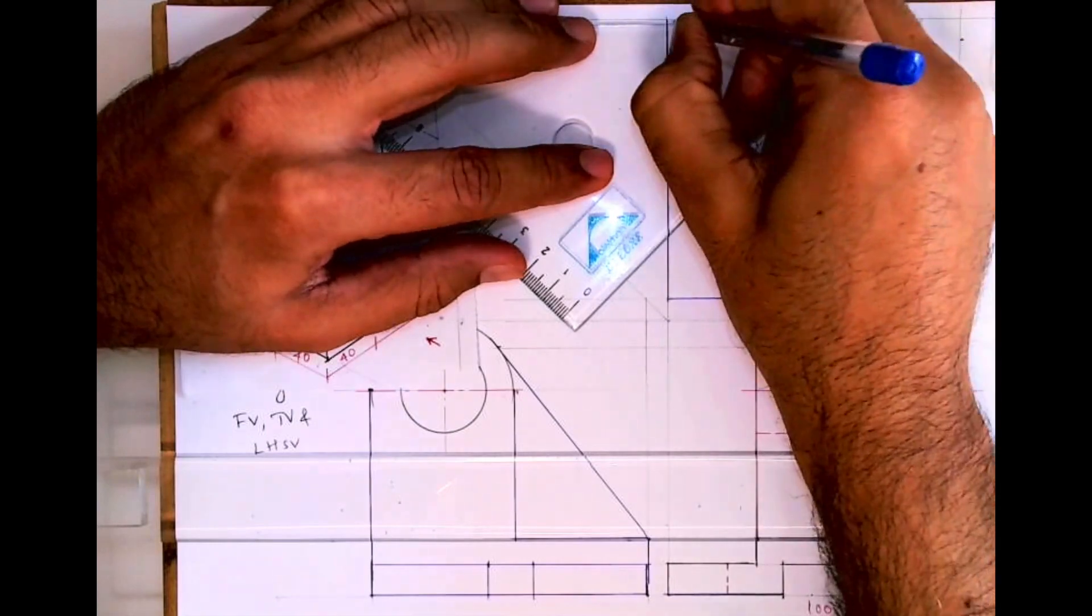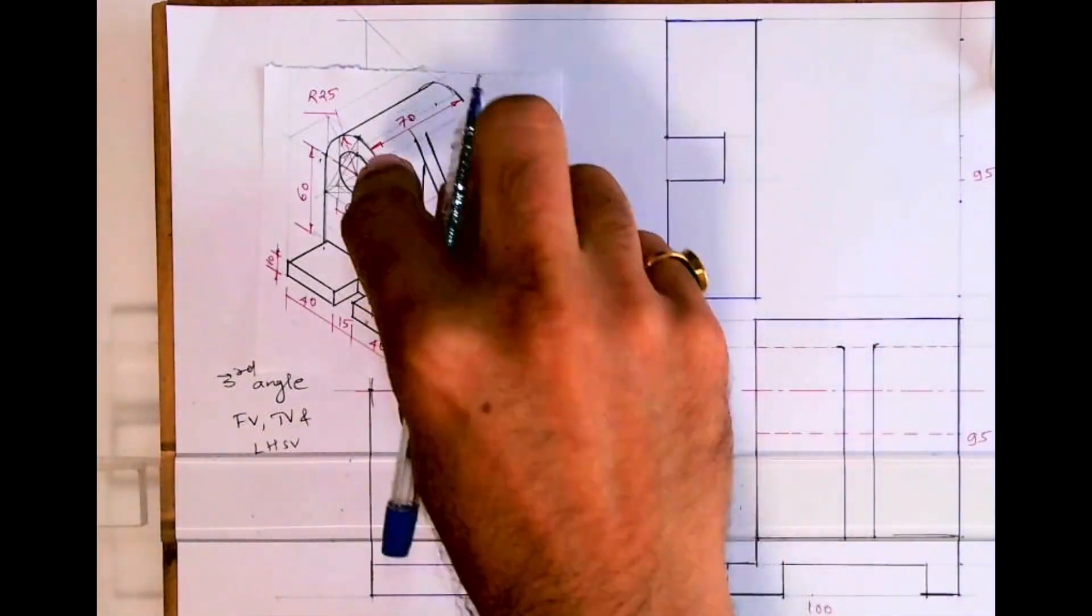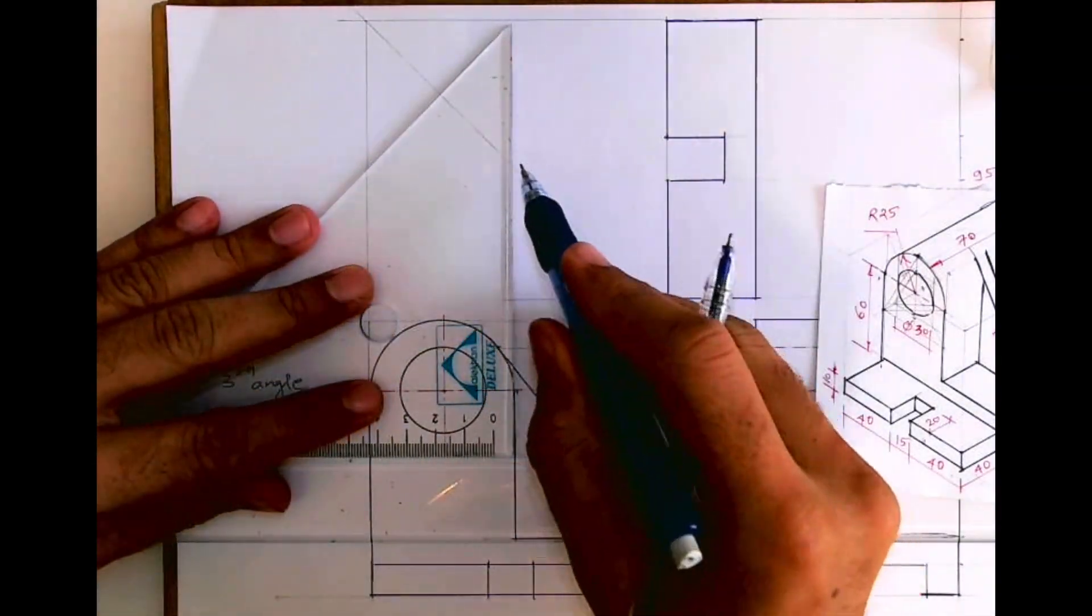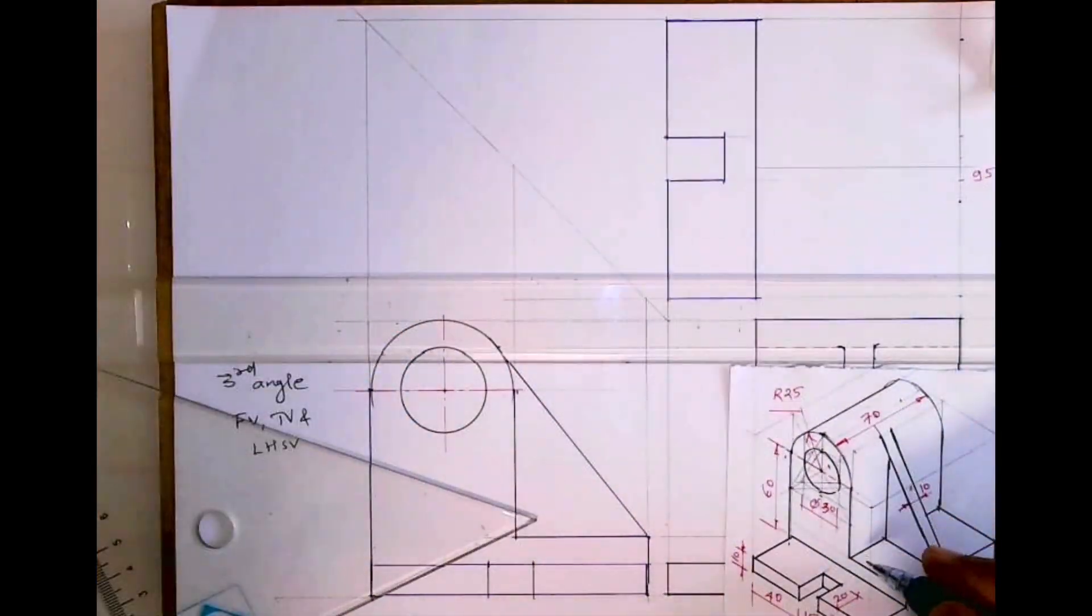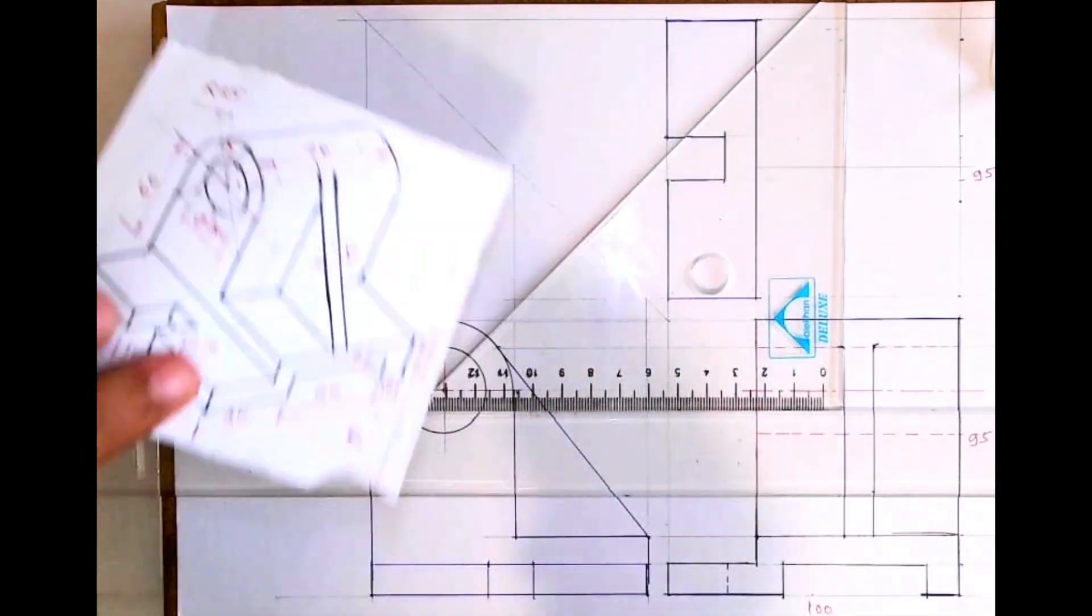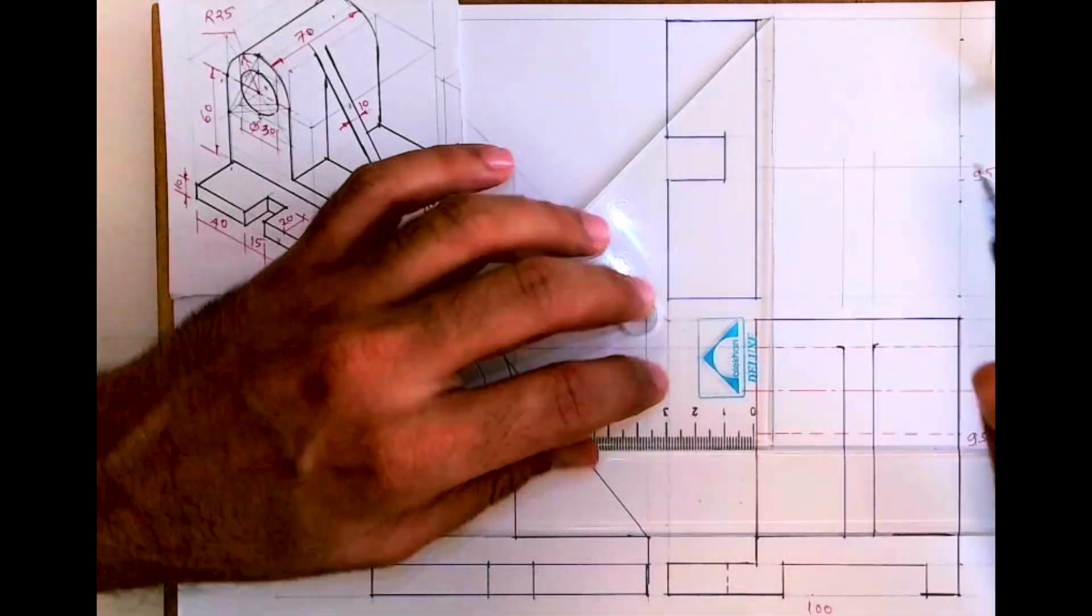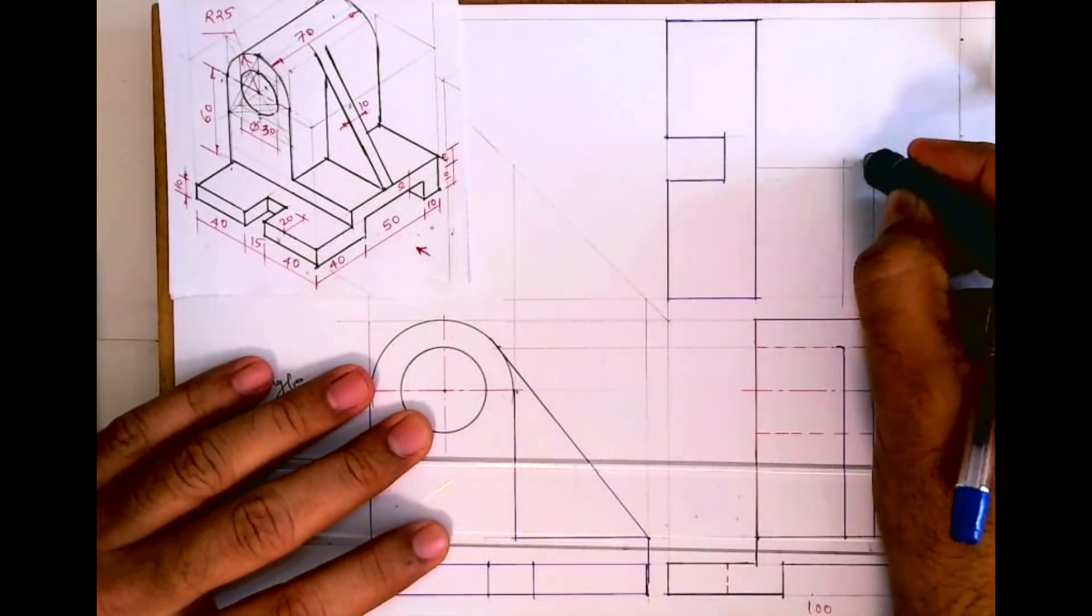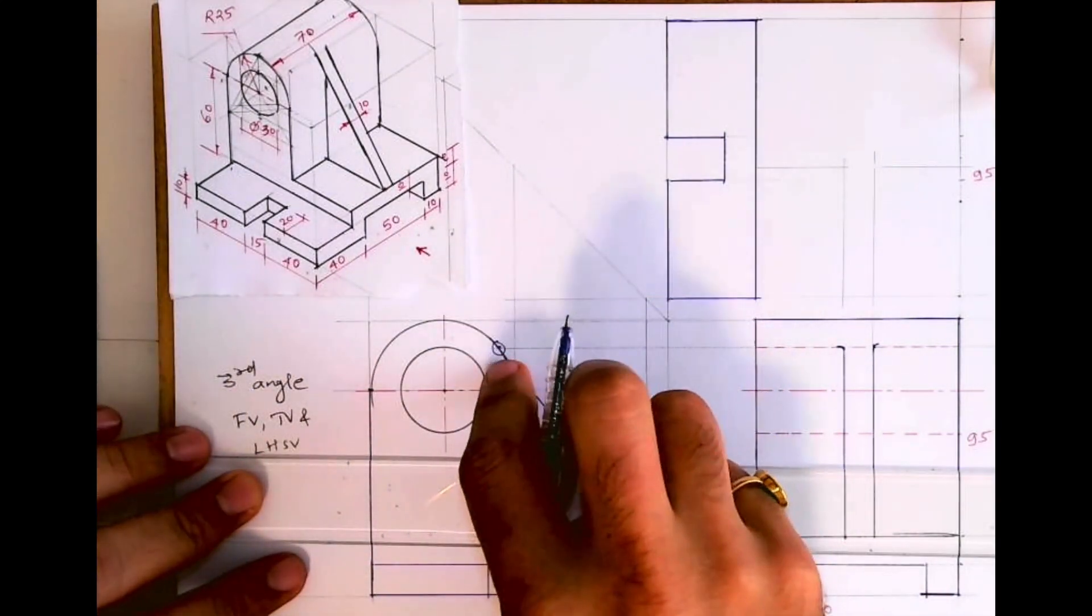So we are done with this part in top view. Now we'll draw this part. This circular part will appear as a rectangle, so we can project line from here. I will extend this line and then I will extend this rib also rectangle. Now here also this line is not there, see the one which I am erasing, it is not there and we don't know how long this line will go.